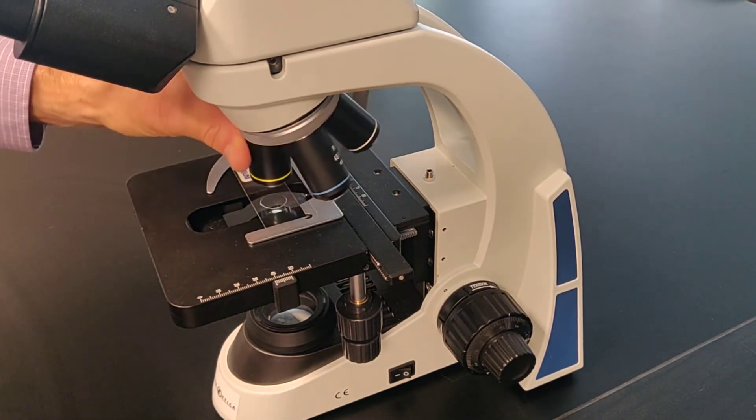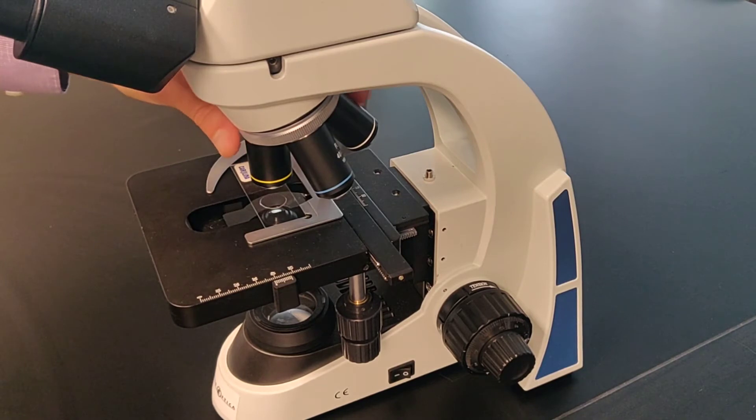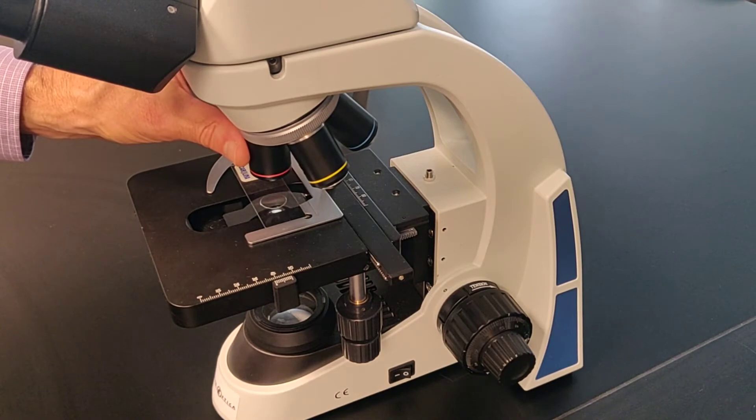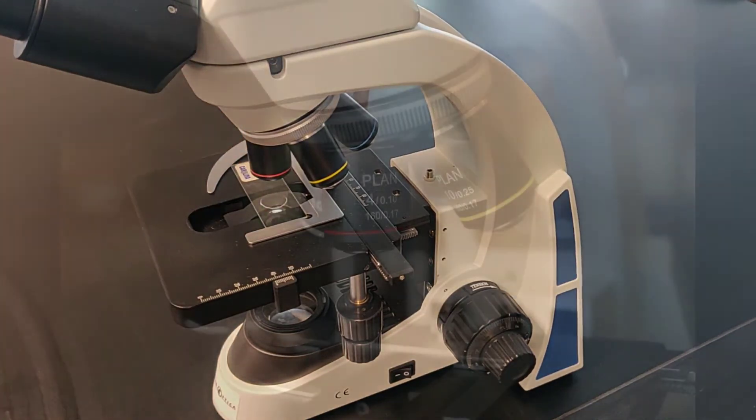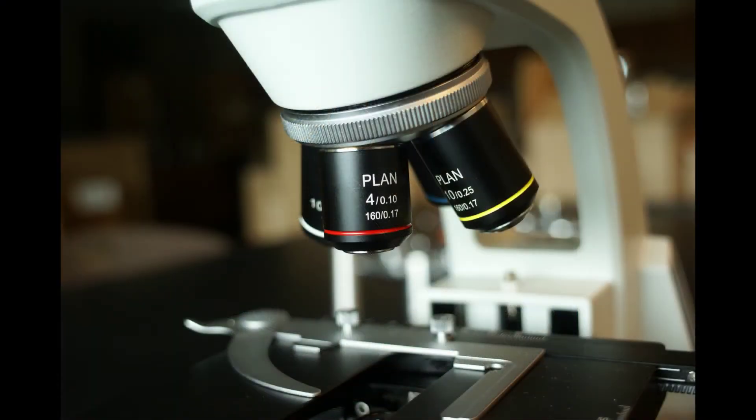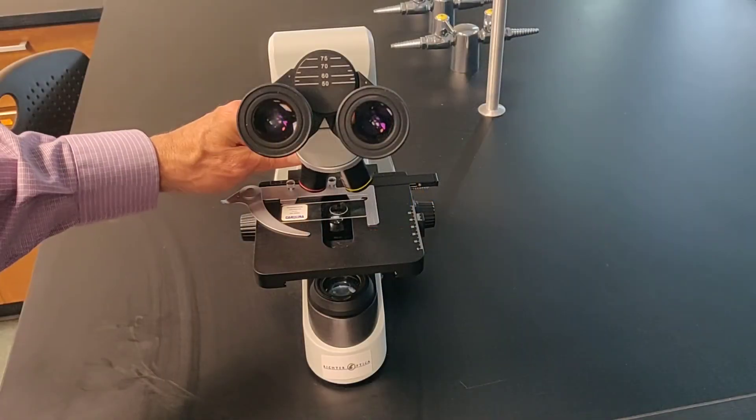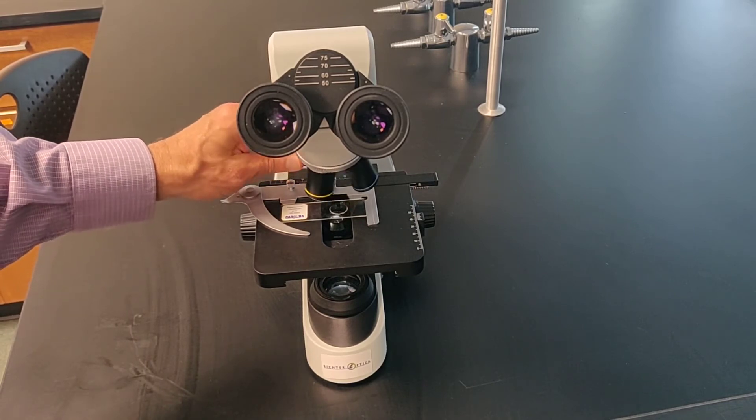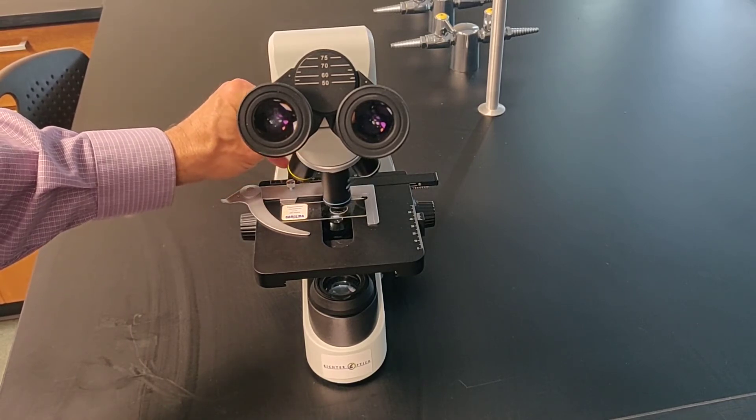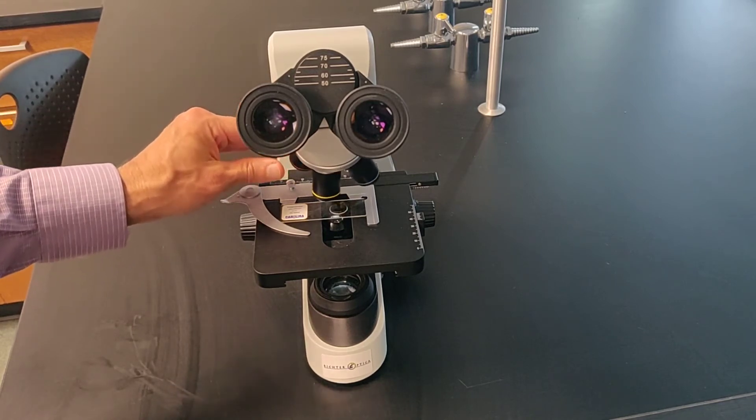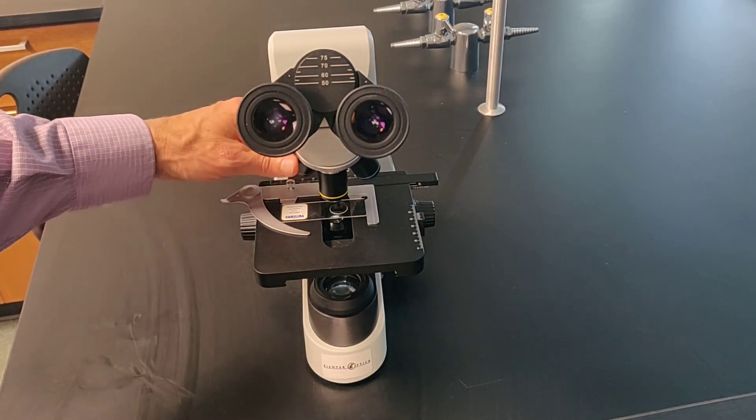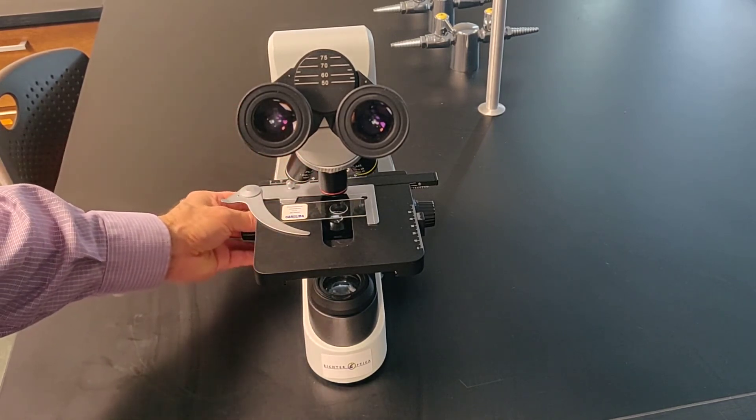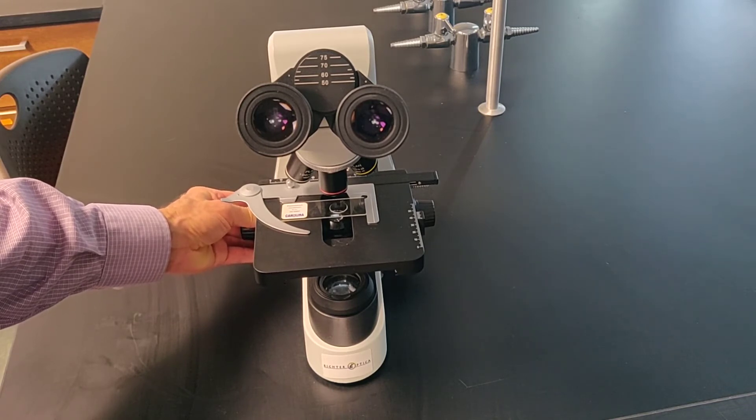Most light microscopes are designed so that once a specimen is focused at a lower magnification, starting with the 4x scanning lens, moving to progressively higher magnifications should maintain the focus and the viewing location of the specimen. Devices will vary on how well calibrated they are to maintain a fixed focus and location, and some small adjustments might be needed using only the fine focus knob or slight movements of the stage controller knob.